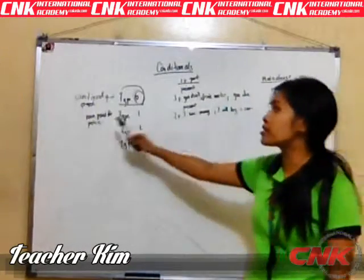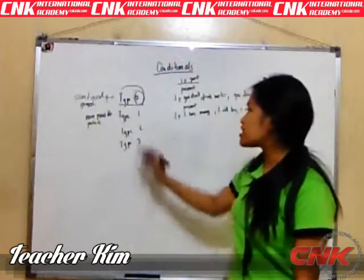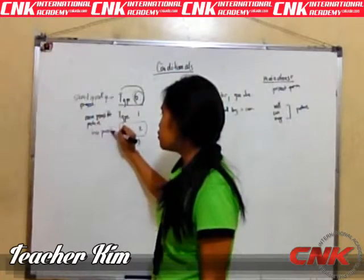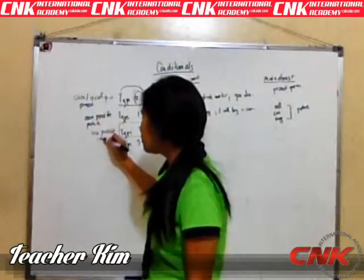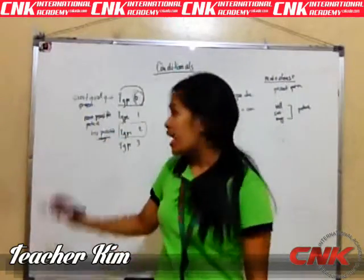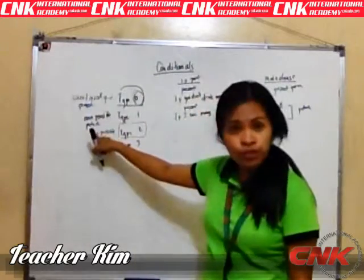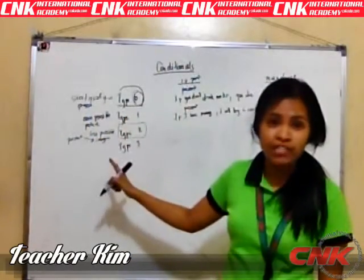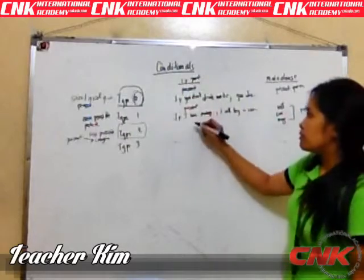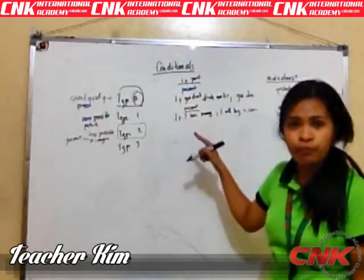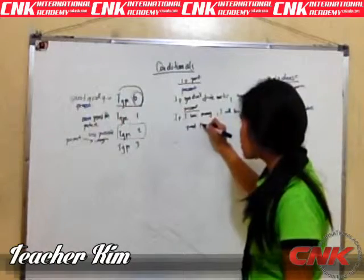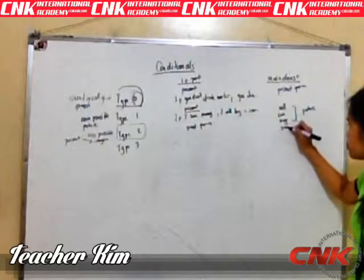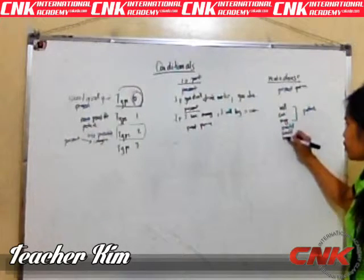It is more possible because it's going to happen in the future. Next, let's proceed with Type 2. With Type 2, it is less possible. If it is less possible, that means you're going to imagine it. And while Type 1 is future, Type 2 is present — that is why you're just going to imagine it. In Type 2, where Type 1 uses the present form for the if-part, in Type 2 you're going to use the past form of the verb. And in the main clause, you can use would, could, or might.